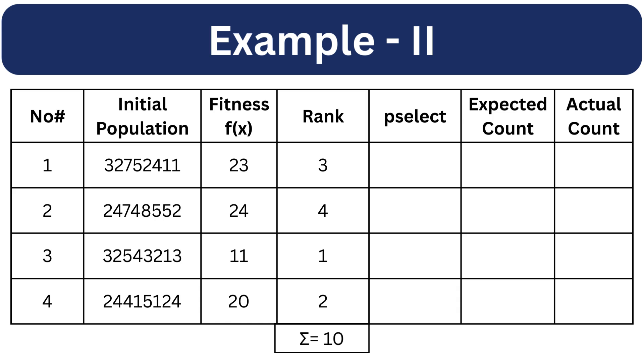Now instead of proportionate selection method, we will be using rank selection method in this example. We will rank each individual based on their fitness starting from 1 till 4. So the individual with least fitness gets rank 1, individual with the best fitness gets rank 4.